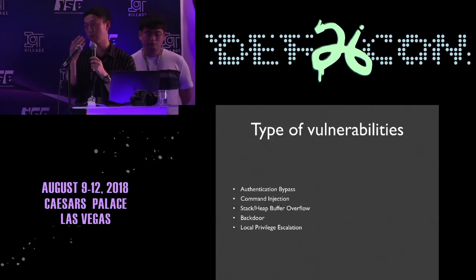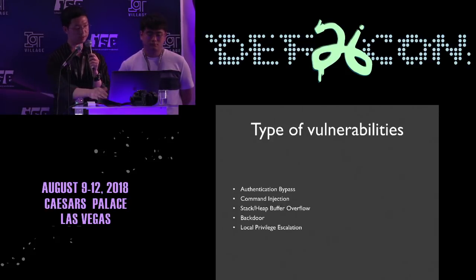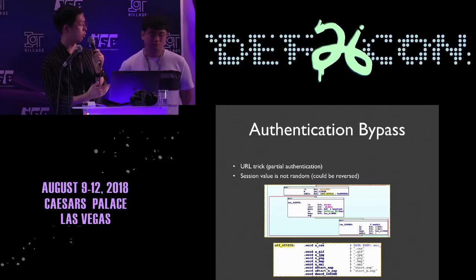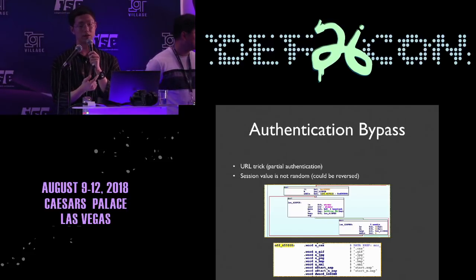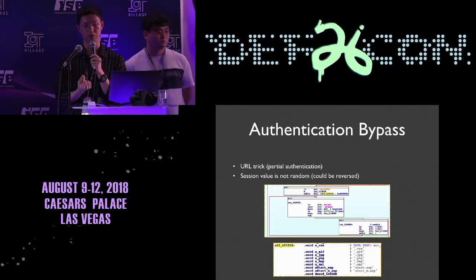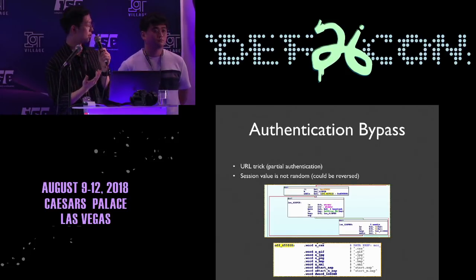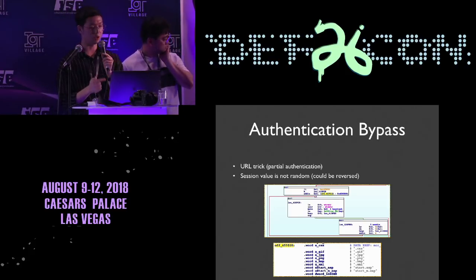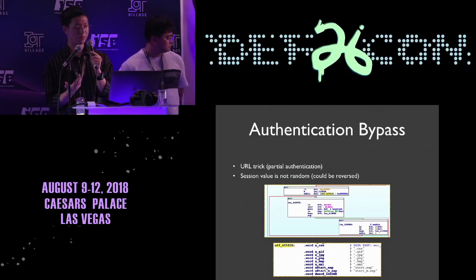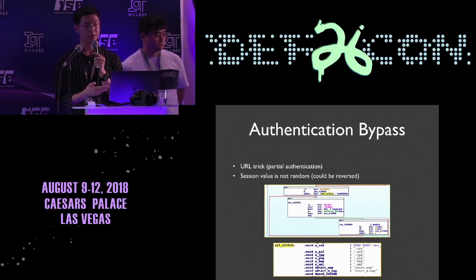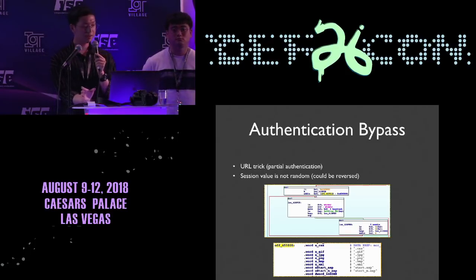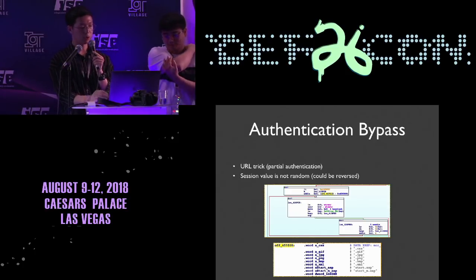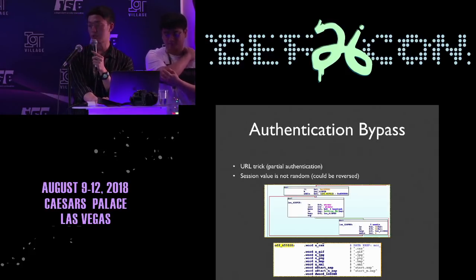There are five categories of vulnerabilities we found. The first is authentication bypass. When sending a payload to a web application, it usually validates the session value. We can bypass authentication with a simple URL trick — if the request URL ends in .css, .gif, .jpg, etc., the session validation function is not called. In some cases, the program creates a session value non-randomly, allowing us to bypass authentication by generating a valid session value.